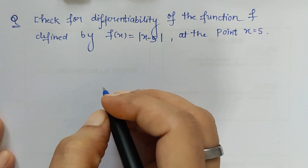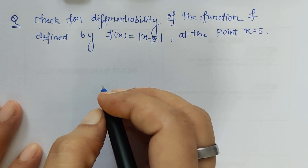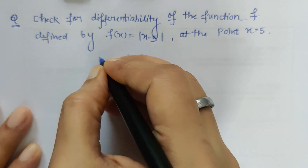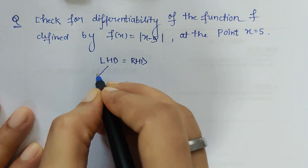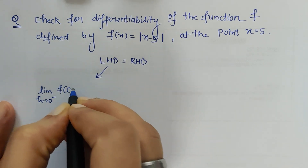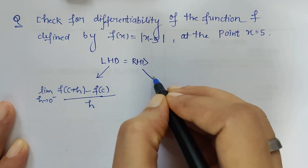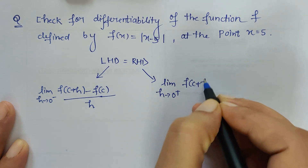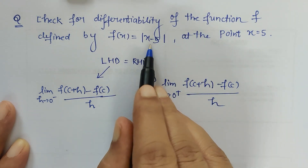Hello friends, good afternoon. Here I am with a differentiability problem, but before solving it we must know the definition of differentiability. For any function to be differentiable at a point c, the definition is: the left hand derivative should be equal to the right hand derivative. The left hand derivative is limit h tending to 0 minus, f(c+h) minus f(c) upon h. The right hand derivative is limit h tending to 0 plus, f(c+h) minus f(c) upon h.